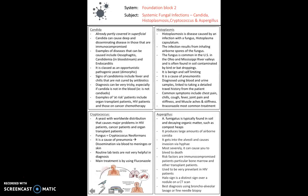Moving to systemic fungal infections, there are four key ones. Candida, already covered superficially, can now cause deep and disseminating disease, particularly in immunocompromised patients. It tends to cause esophagitis, candidemia — which is candida in the blood — and endocarditis. It's classed as an opportunistic pathogen, and signs of candidemia include fever and chills not cured by antibiotics. It's actually quite tricky to diagnose, particularly when candida is not in the blood.